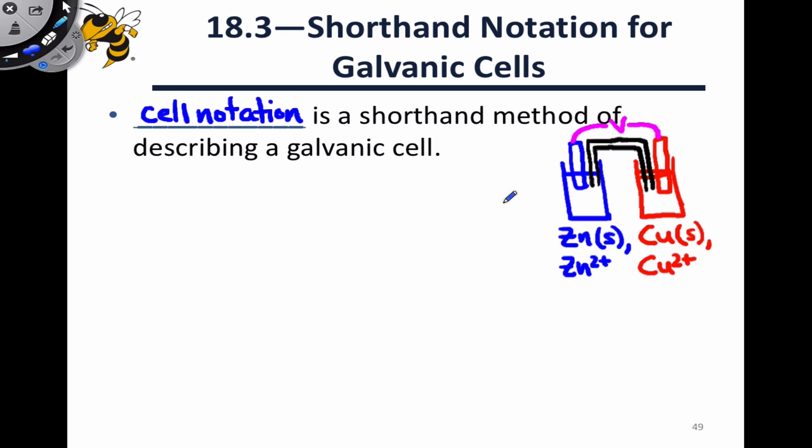To ensure that the notation communicates something unambiguous, certain conventions are used. The first overarching rule is that in cell notation, the anode is always written first, followed by the salt bridge in the middle, and we'll see there are special designations for the salt bridge and a couple of other special points in the galvanic cell. And the cathode is always written last.